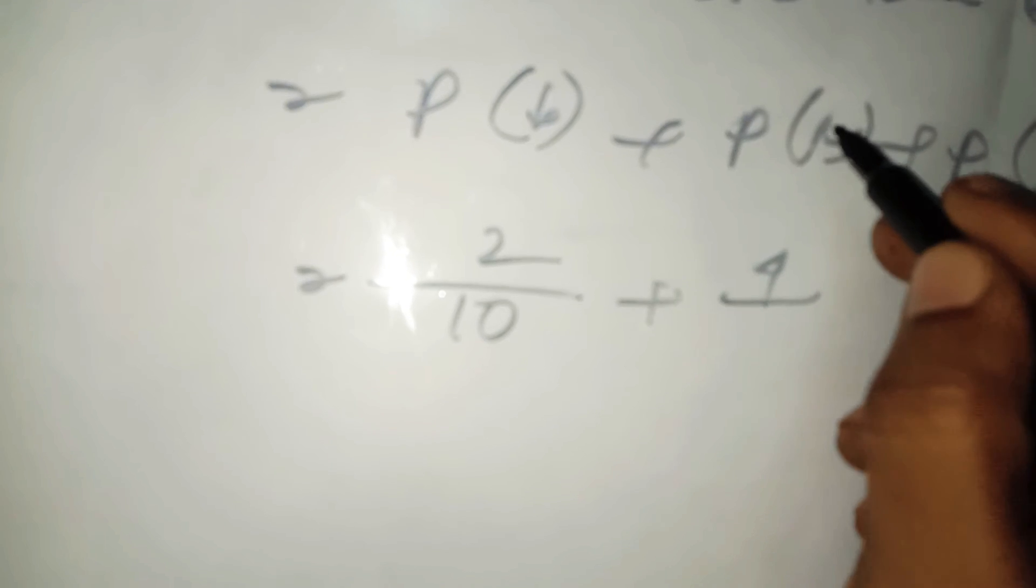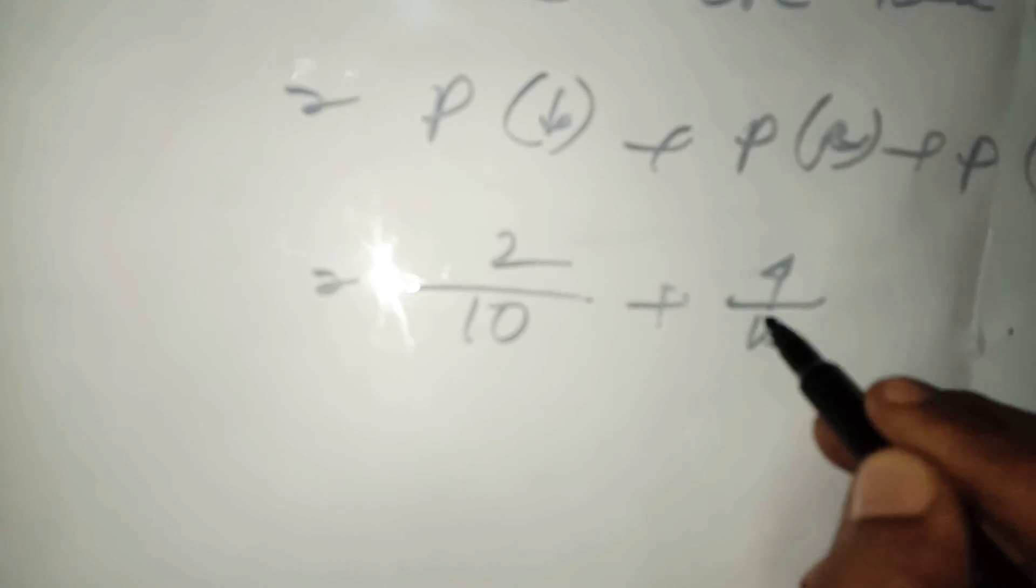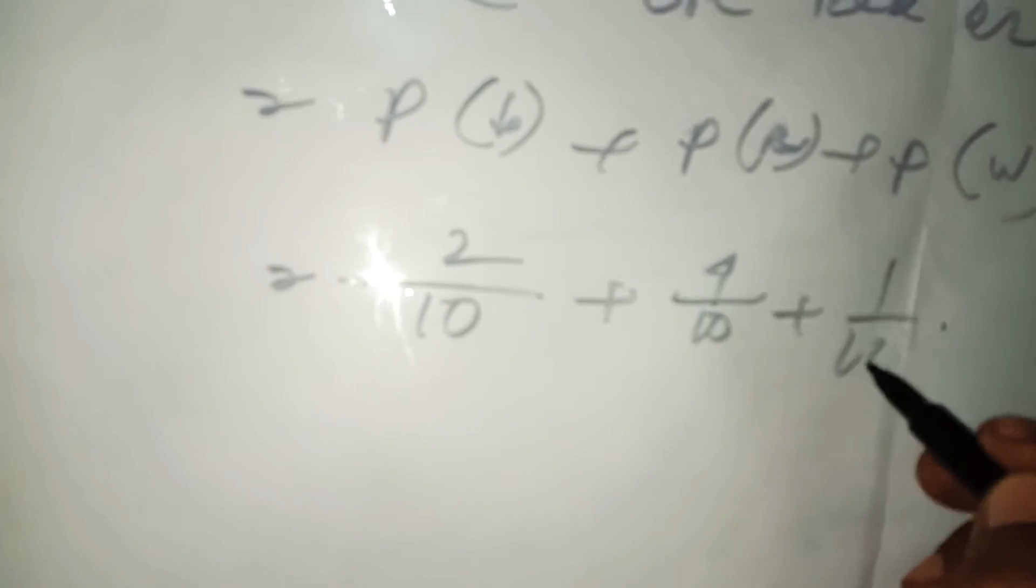Now, D: probability of blue or red or white. P of blue plus P of red plus P of white. P of blue, that means 2 divided by 10, plus red is 4 divided by 10, plus white, 1 divided by 10, equals - LCM is 10 - 2 plus 4 plus 1, that means 7 divided by 10.